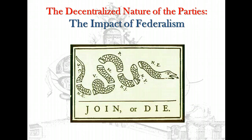Federalism is one major reason for the decentralized nature of the two major political parties. The basic goal of the major parties is to gain control of the government by winning elective offices. Today, there are more than half a million elective offices in the United States. In the American federal system, those offices are widely distributed at the national, state, and local levels. Because the governmental system is decentralized, giving many powers to states and localities, so too are the major parties that serve it.